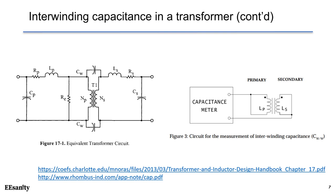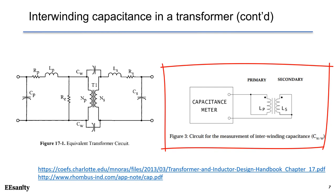The equivalent circuit also includes output capacitance, or secondary winding capacitance Cs. On the right-hand side is an illustration for measurement of inter-winding capacitance Cw. To measure it, the primary side terminals are shorted together and the secondary side terminals are shorted together. If we then measure the primary-to-secondary capacitance, the measured value equals the inter-winding capacitance.